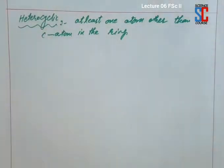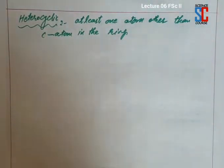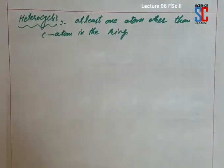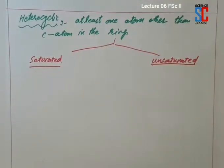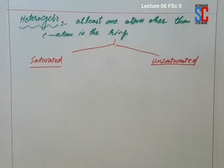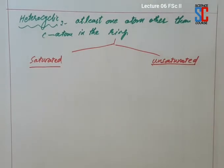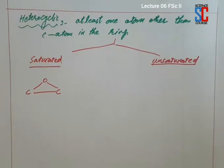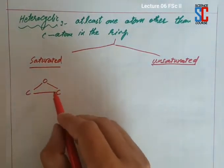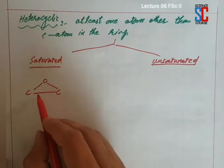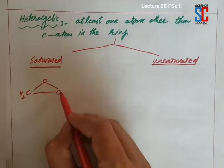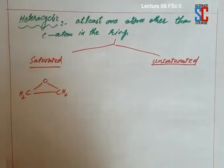So closed chain compounds were classified into 2 types: homocyclic and heterocyclic. We have discussed homocyclic. Heterocyclic compounds are those in which at least one atom in the ring is other than carbon. Heterocyclic compounds are divided into 2 major types: saturated and unsaturated. Saturated heterocyclic compounds are those in which there are no double or triple bonds between carbon atoms — only single bonds — and the ring has at least one atom that is not carbon. For example, a ring with 3 atoms — 2 carbon and 1 oxygen. Carbon has 2 remaining valencies each satisfied by 2 hydrogen atoms, and oxygen satisfies its 2 bonds in the ring. This is a saturated heterocyclic compound.